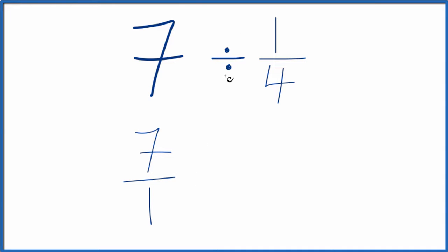And instead of division, we're going to multiply by the reciprocal of 1 fourth. So we'll take the numerator, move it down, and put the denominator on the top. So we end up with 4 over 1. So we have 7 over 1 times 4 over 1.